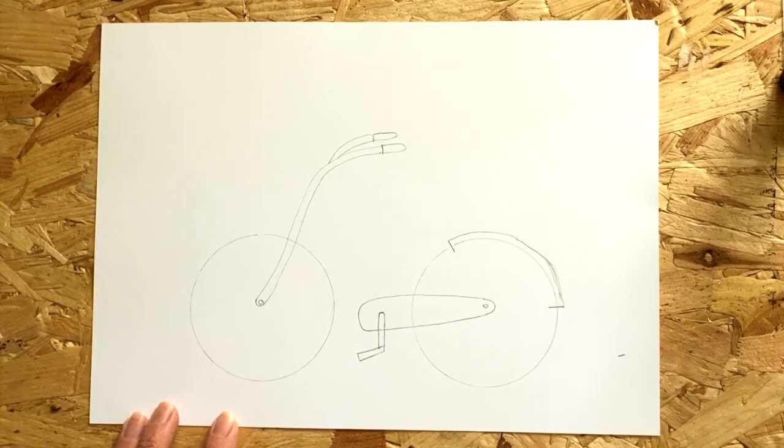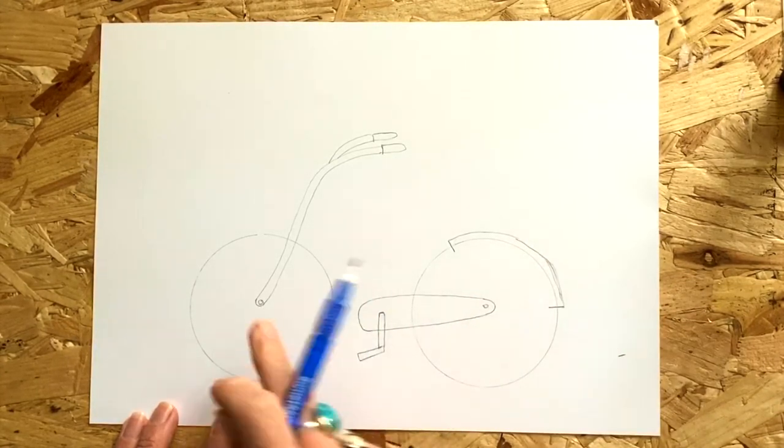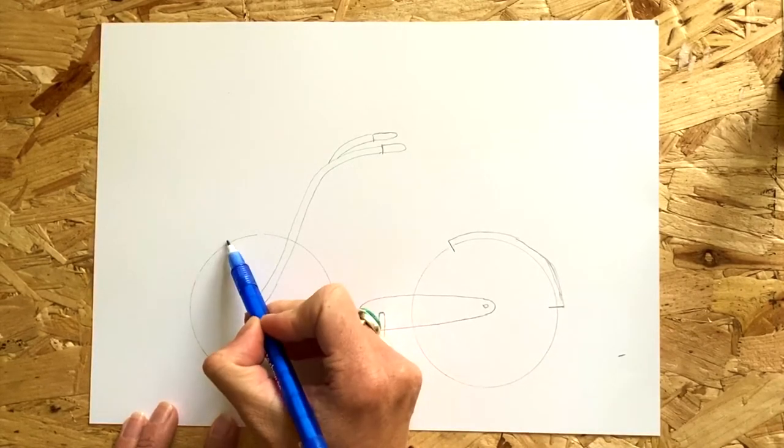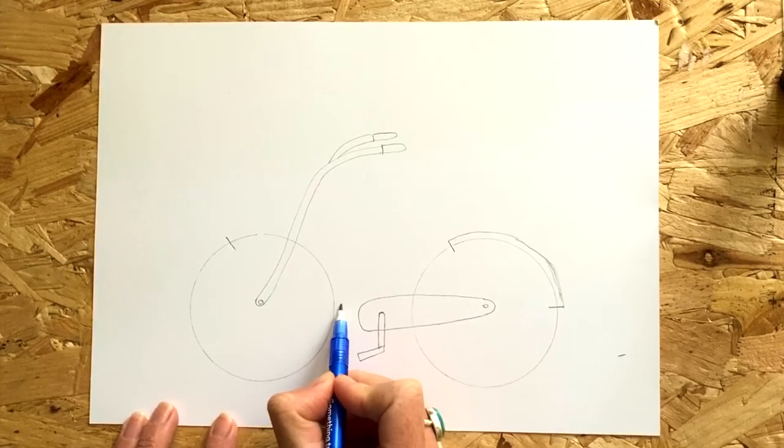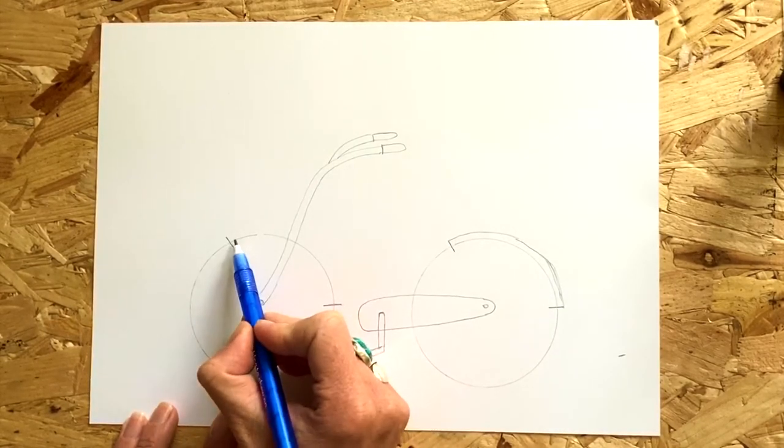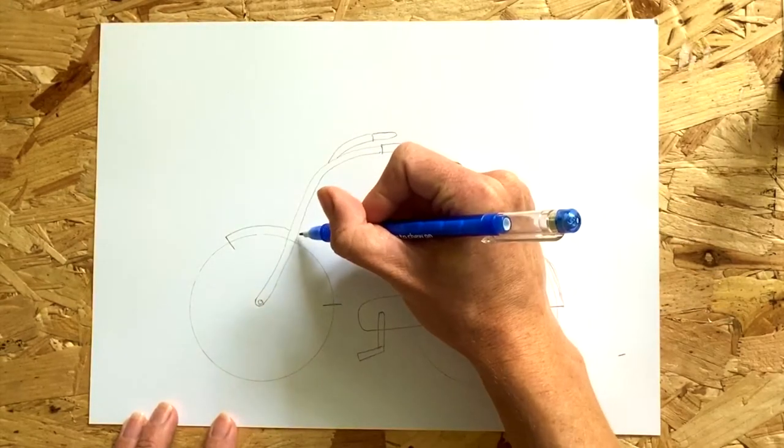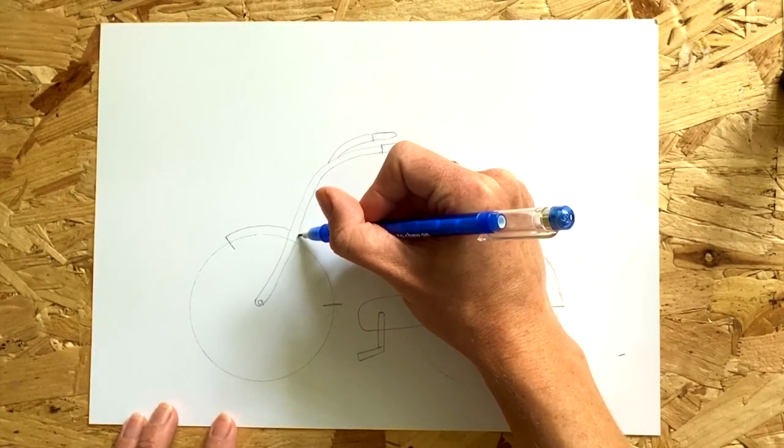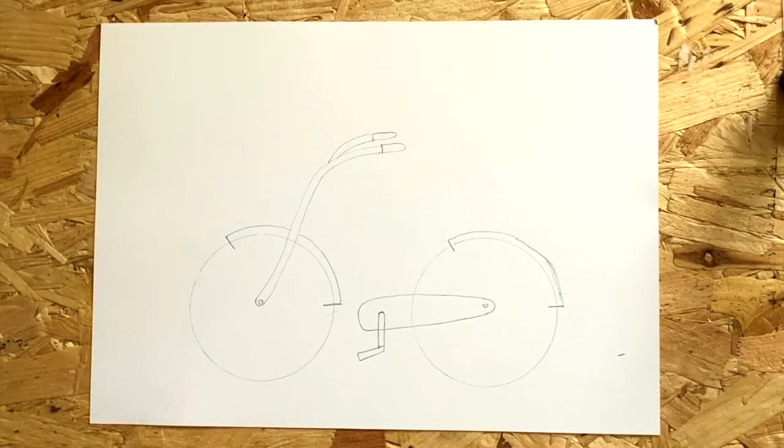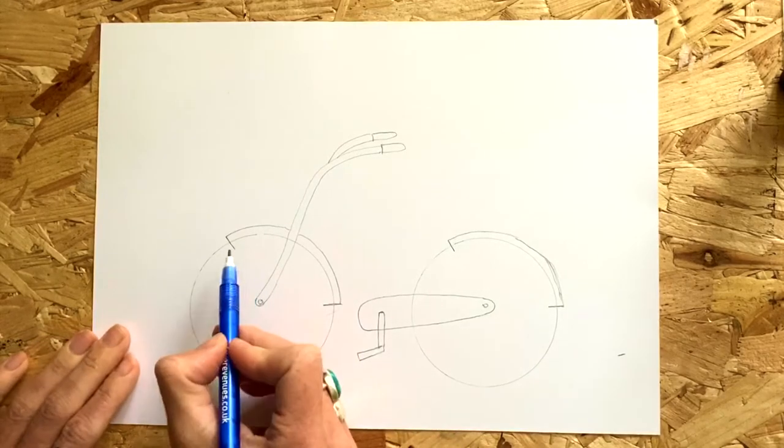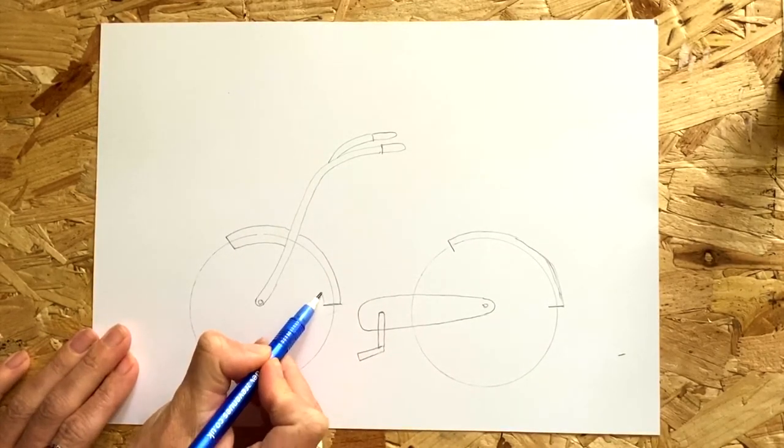Don't worry if your pencil marks are not super neat because we're going to draw over it in pen later anyway. Repeat the same thing for the front wheel. Then simply join the bottom ends together as well. Do this for both wheels.